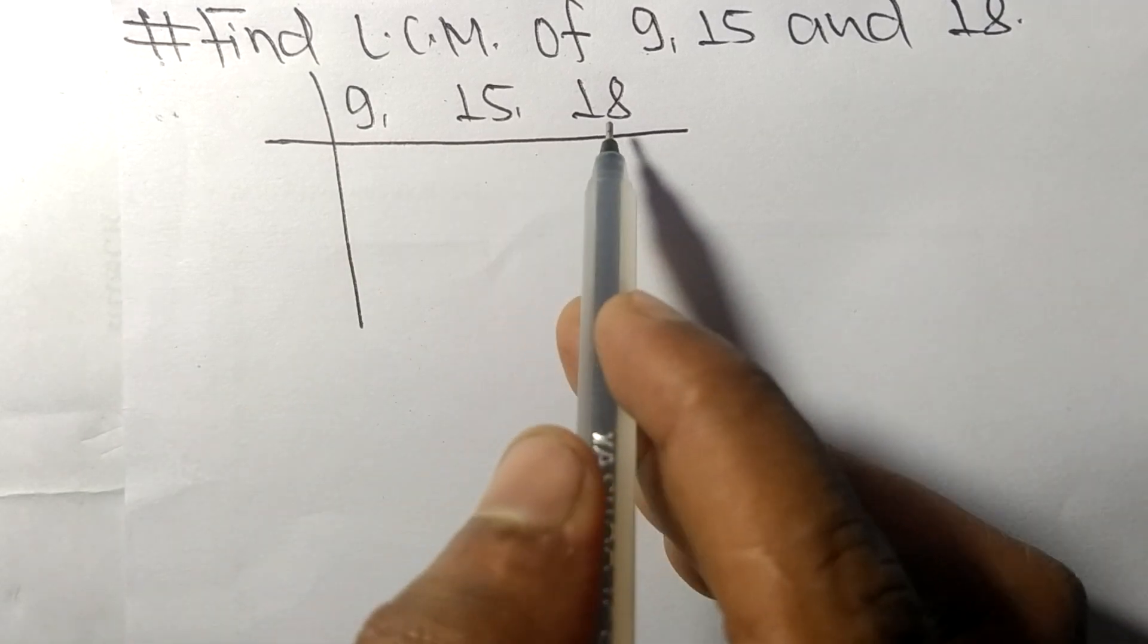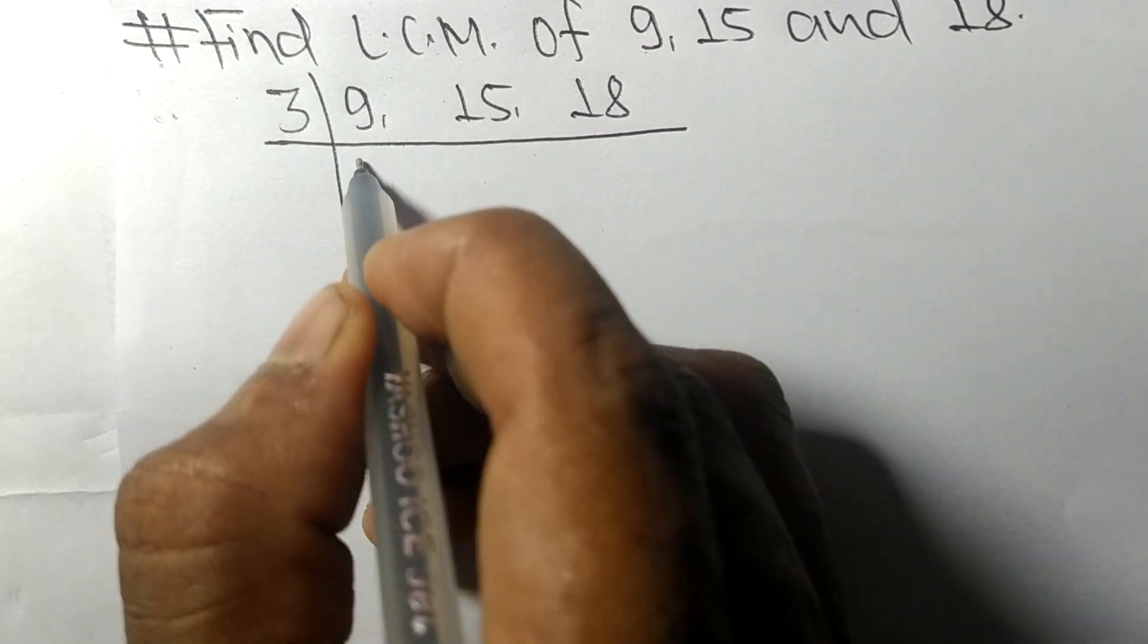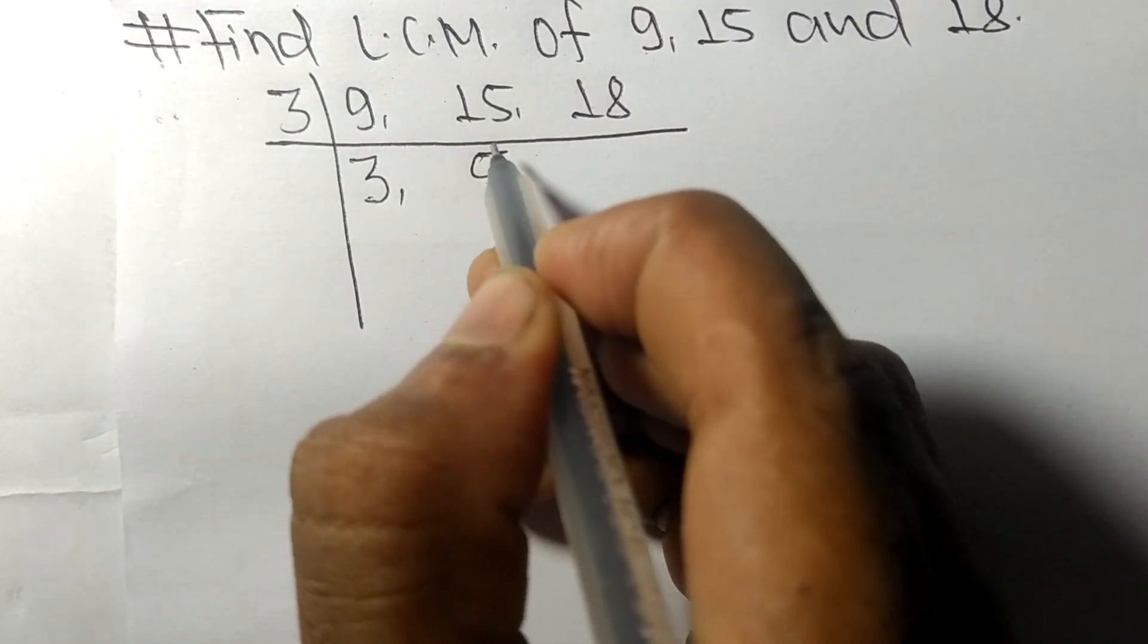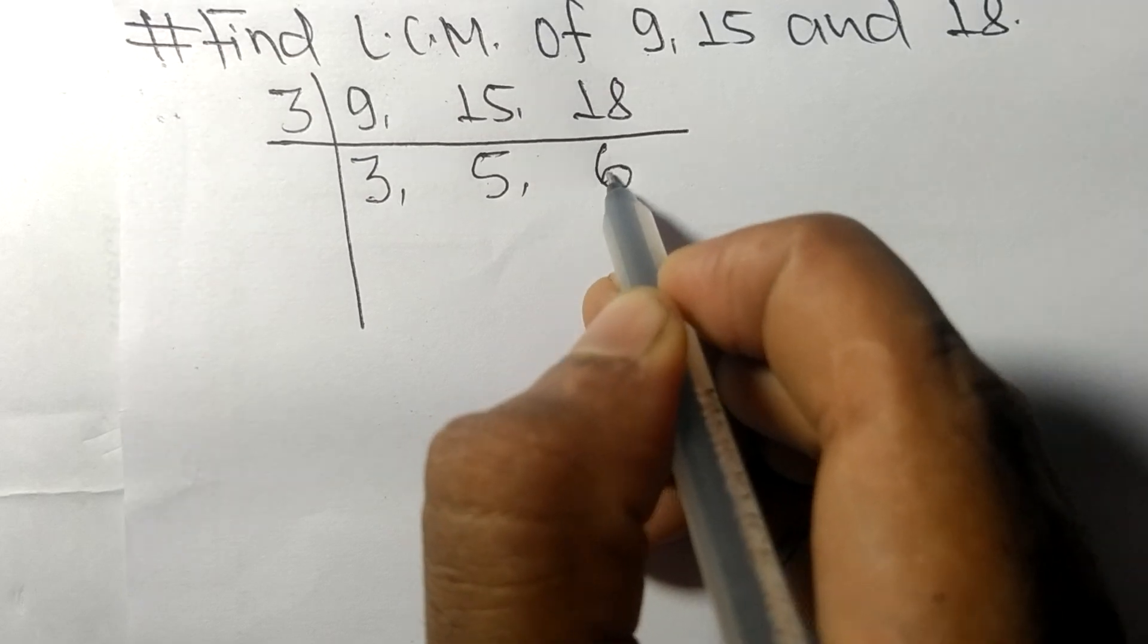So these numbers are divisible by 3. 3 times 3 means 9, 3 times 5 means 15, 3 times 6 means 18.